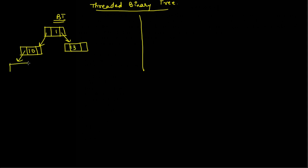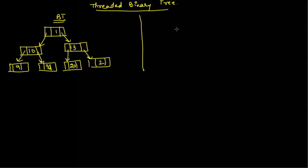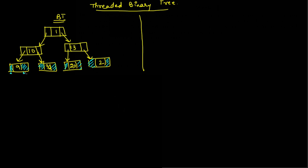For this node 10, the left subtree is storing 19 and the right subtree is storing 32. The left subtree for node 13 is storing 20 and the right subtree is storing 2. Now if you see in this binary tree, these pointers are left blank — they are storing null because these are the leaf nodes. So we are wasting this space.